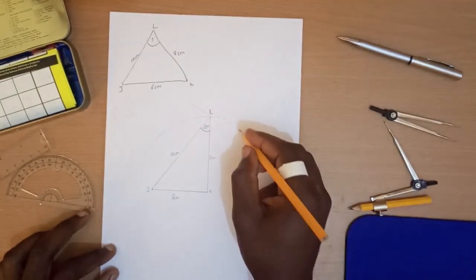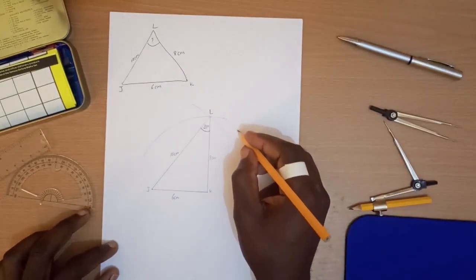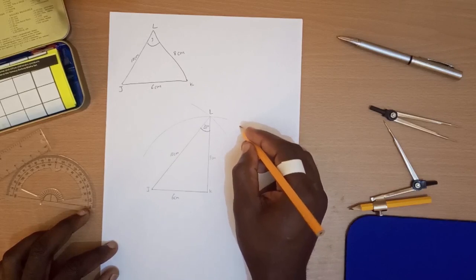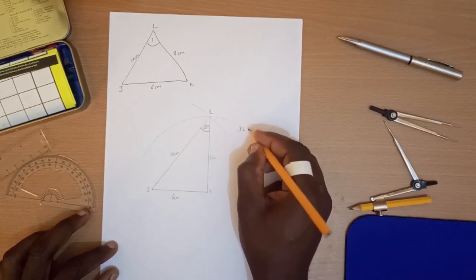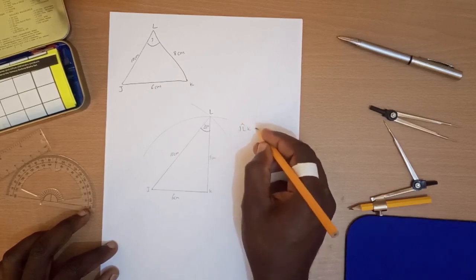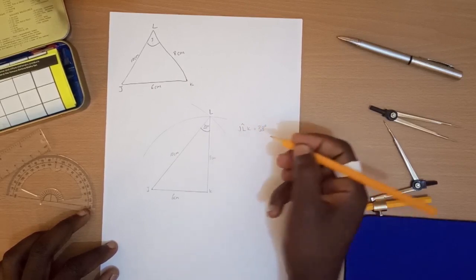So we indicate that the angle JLK is equal to 38 degrees.